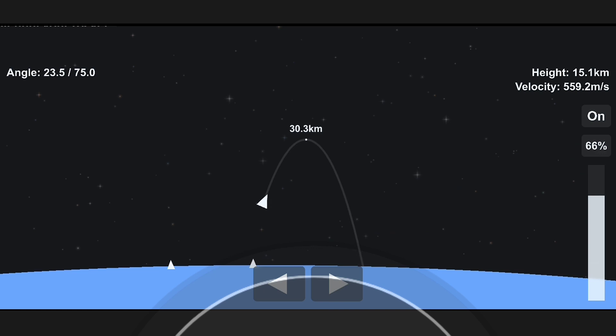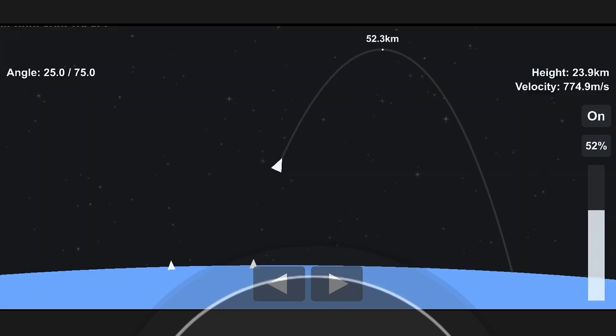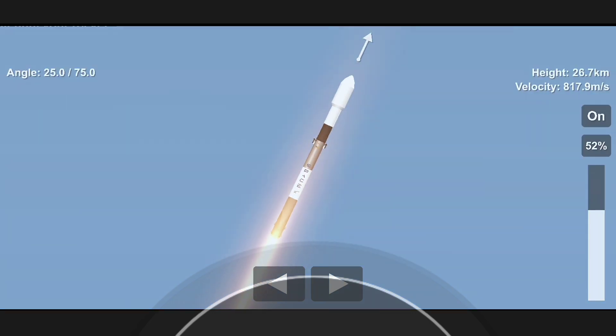Vehicle is supersonic. Vehicle has reached maximum aerodynamic pressure. We've reached max Q. At this point, the loads on the vehicle become less and less as the atmosphere gets thinner. We're now able to throttle those Merlin engines back up, and at maximum power, like right now, the vehicle consumes more than 700 gallons of fuel per second.